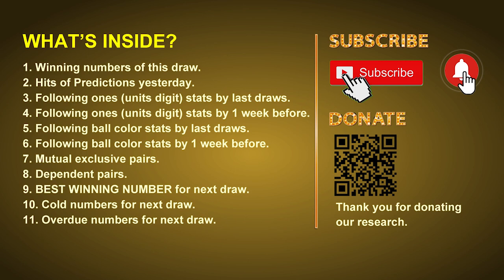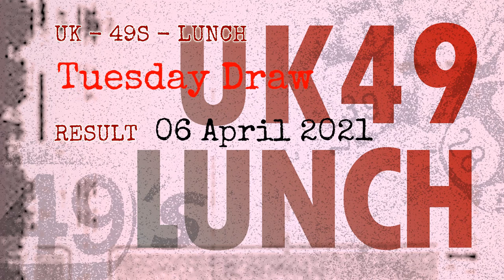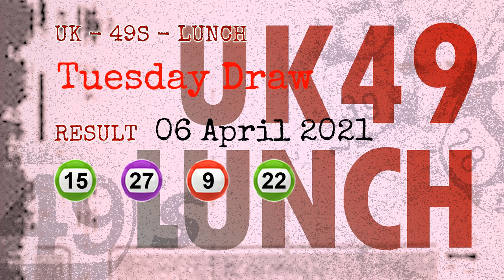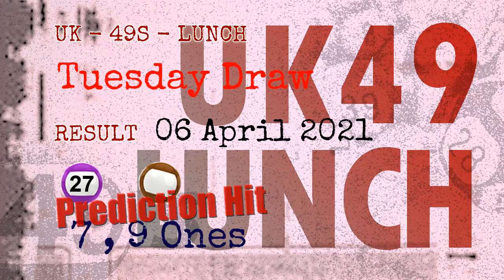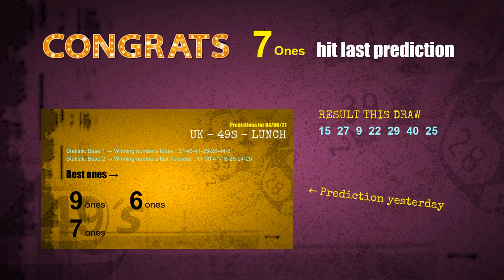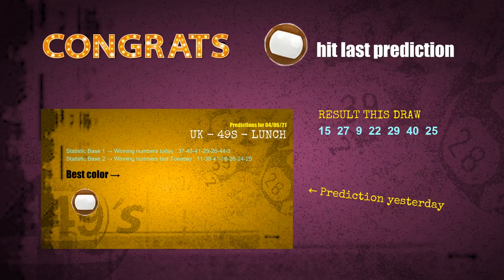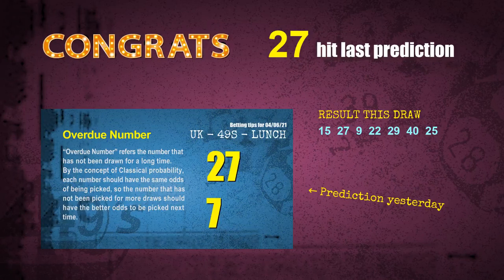The winning numbers of Tuesday, April 6, 2021 are 15, 27, 09, 22, 29, 40, and the booster number is 25. Congratulations to friends who bet on 7-ones, 9-ones, number 27, and brown balls — all of these are hit. Congrats for all winners.